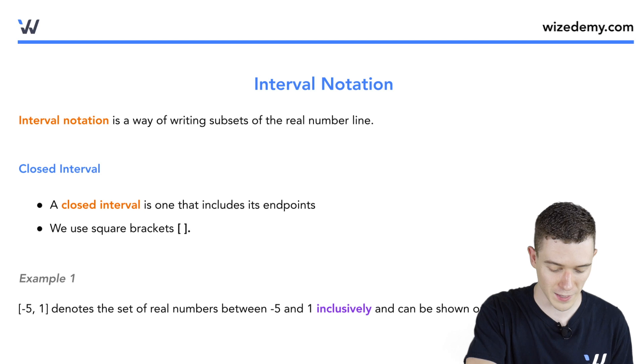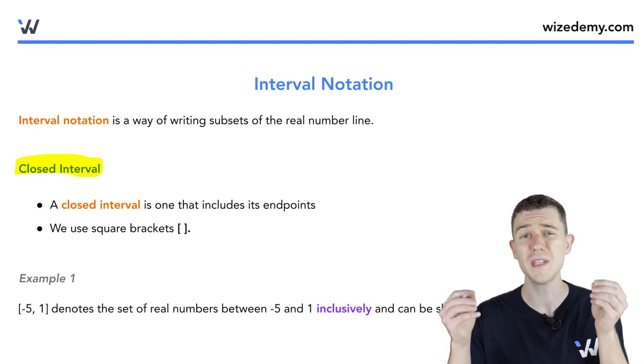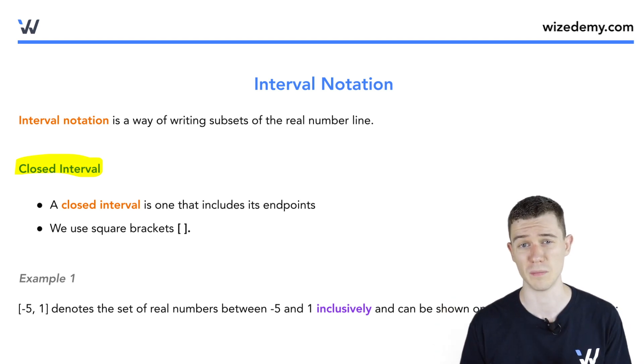Closed intervals look like this. Closed intervals are surrounded by brackets. Brackets mean we include the endpoints of those range of numbers.